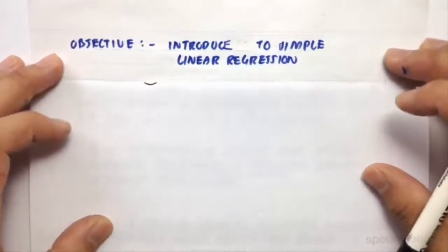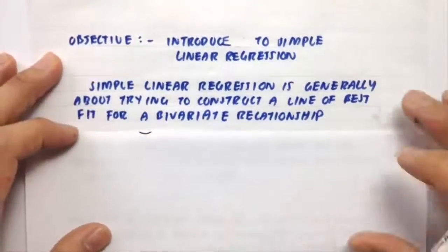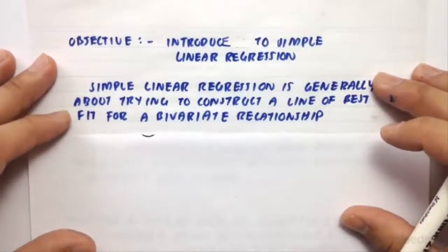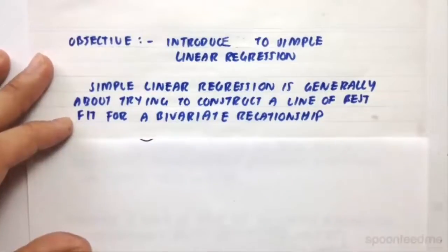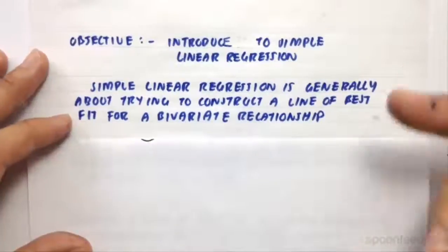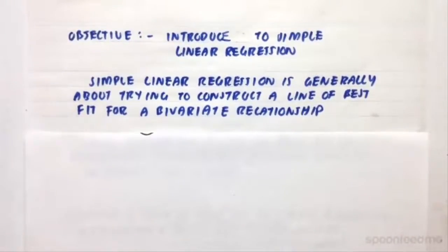Hi guys. Today's video will be an introduction into simple linear regression. So simple linear regression is generally about trying to construct a line of best fit for a bivariate relationship. So by bivariate relationship, I mean a relationship between two variables, so in our case x and y, where x is the independent variable and y is the dependent variable.